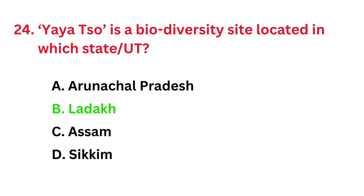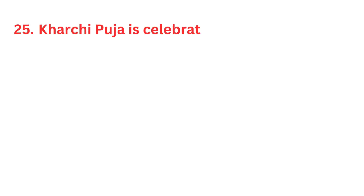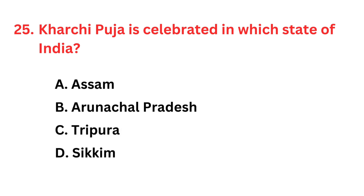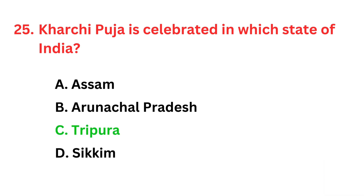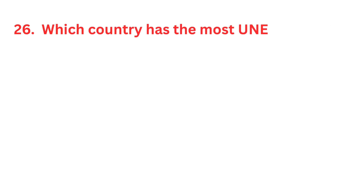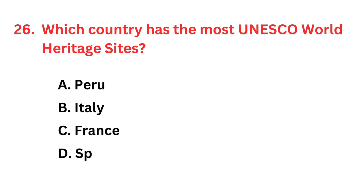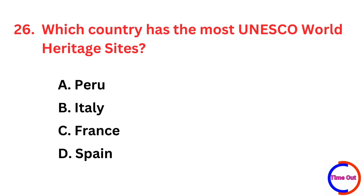The correct answer is option C: Tripura. Which country has the most UNESCO World Heritage Sites? The correct answer is option B: Italy.